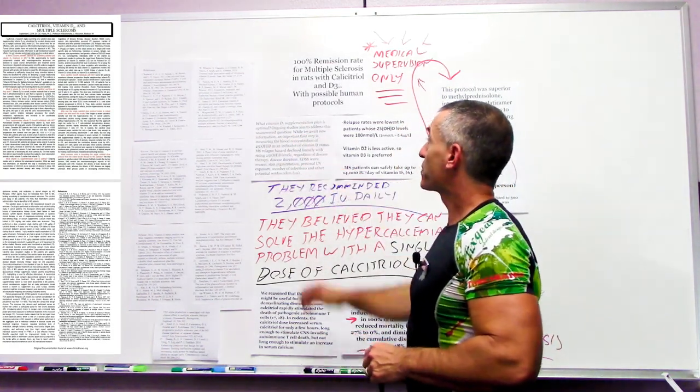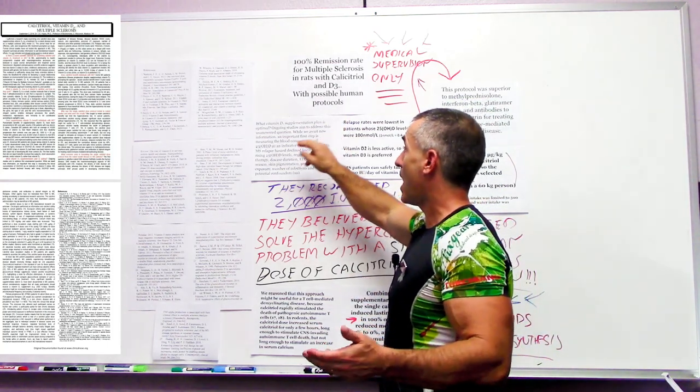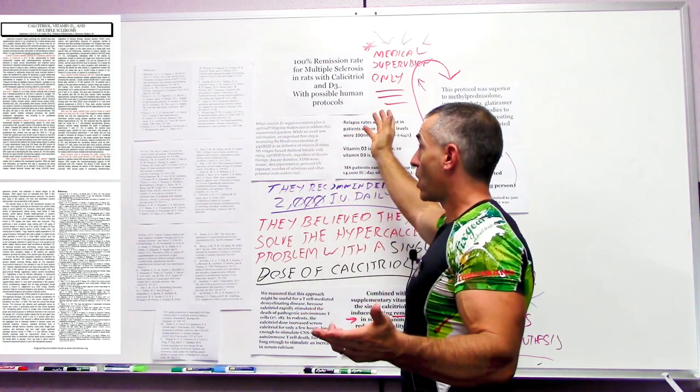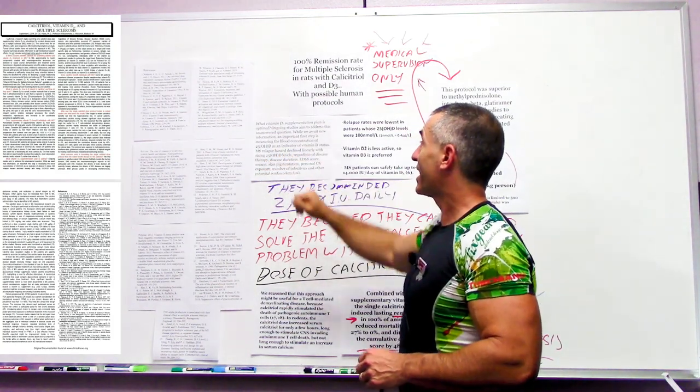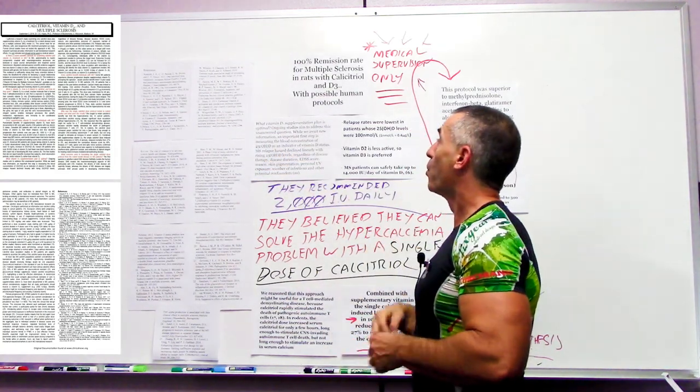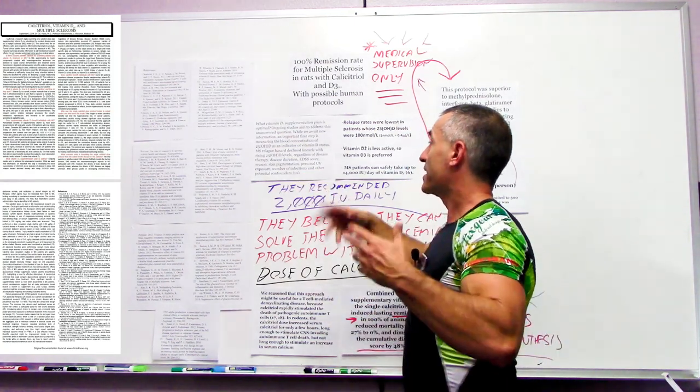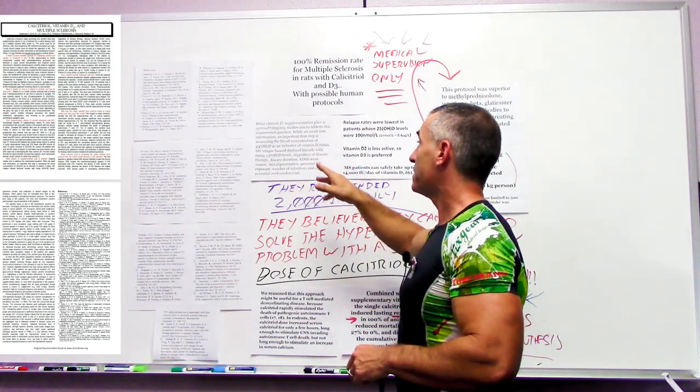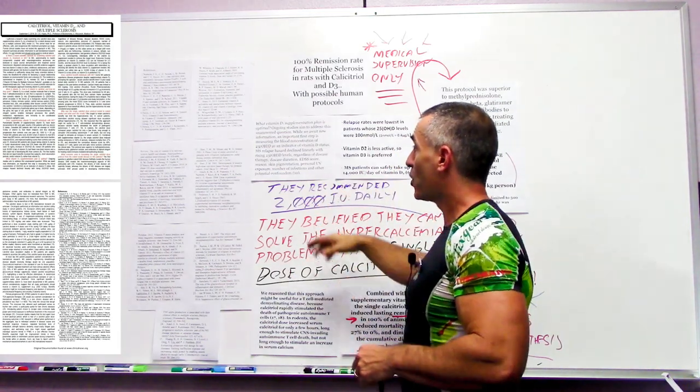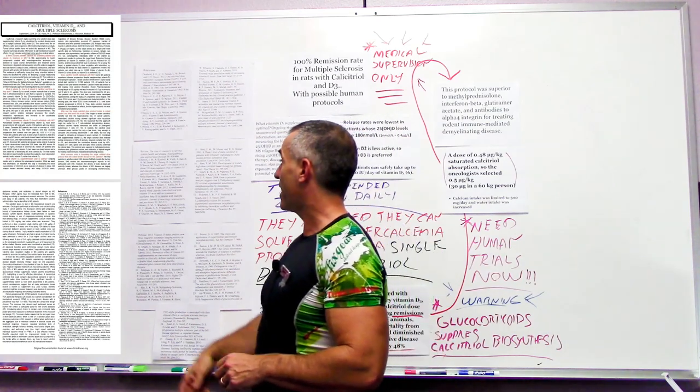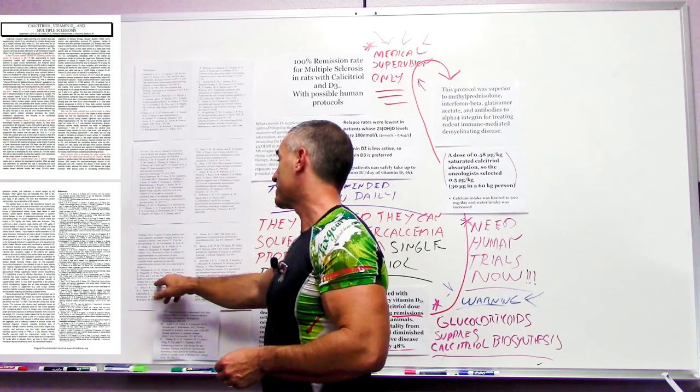They discovered with vitamin D3 that blood concentrations of vitamin D was a major indicator of MS relapse hazard. The higher levels of vitamin D3 in the blood, to a certain point, the MS relapse hazard declined with rising 25-OHD levels regardless of disease therapy, disease duration, EDSS score, season, skin pigmentation, personal UV exposure, number of infections, and other potential confounders.